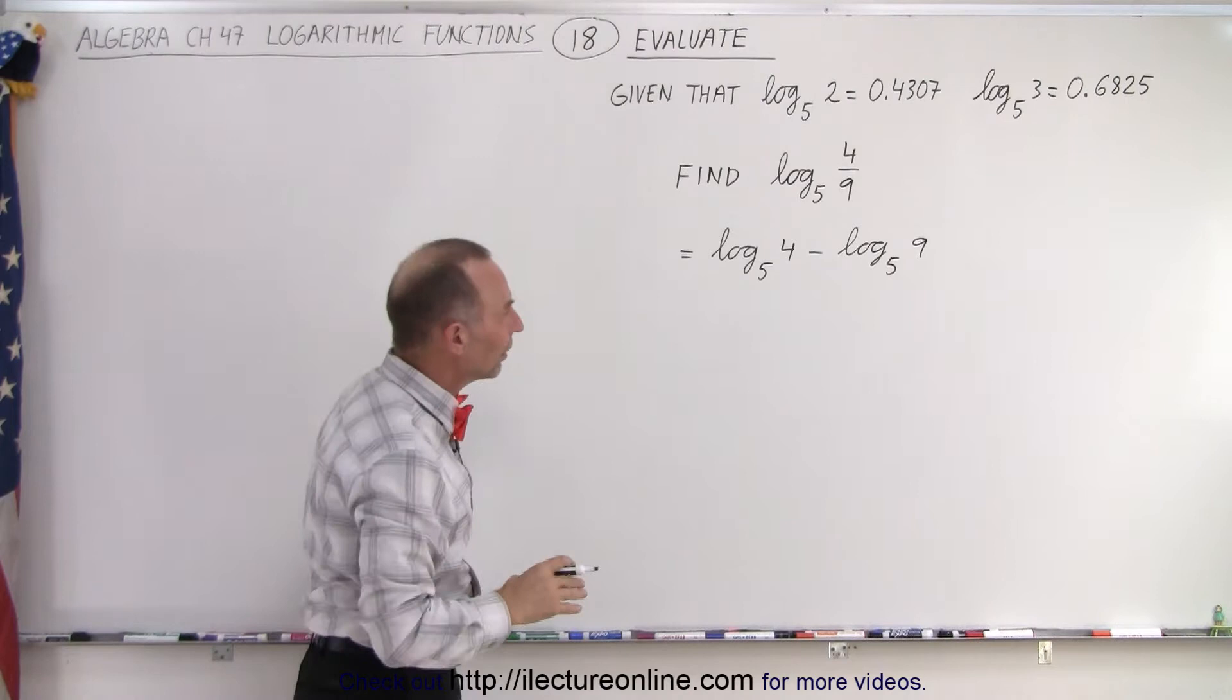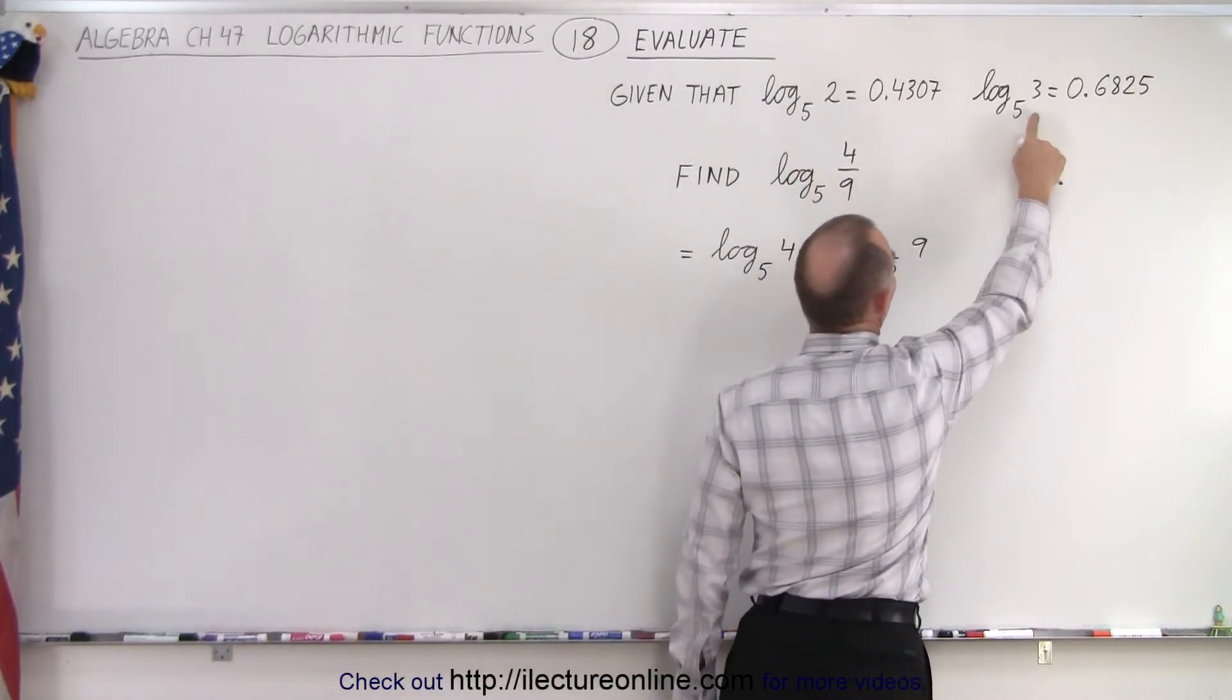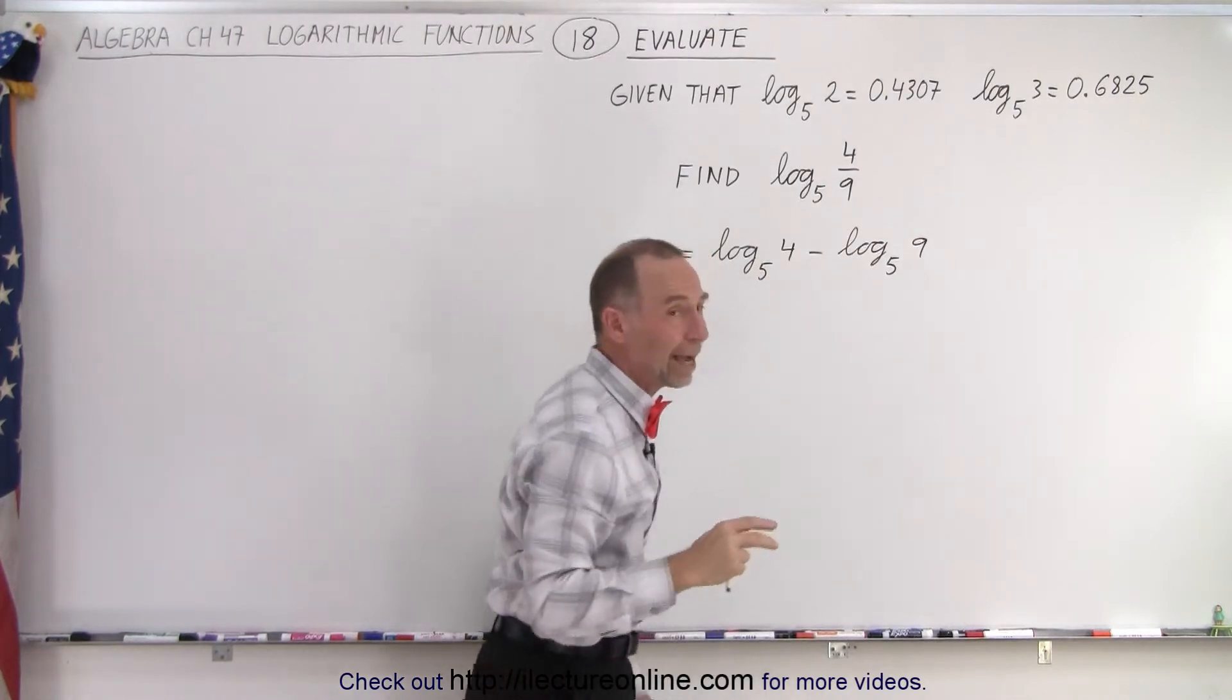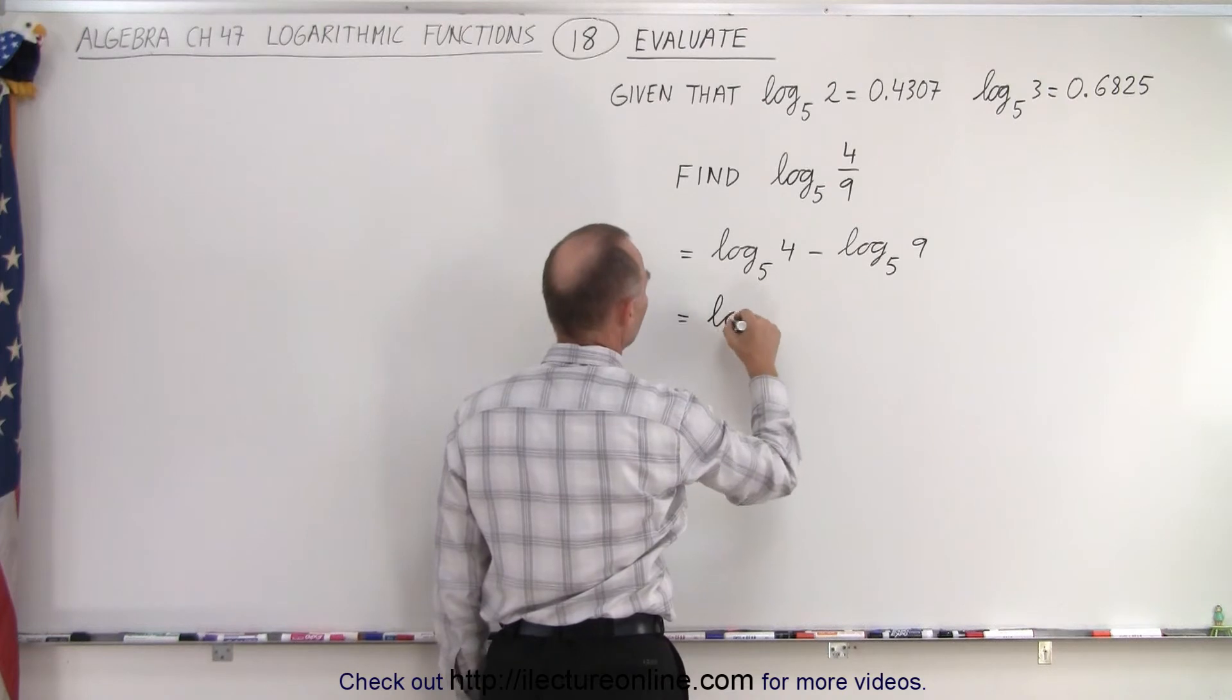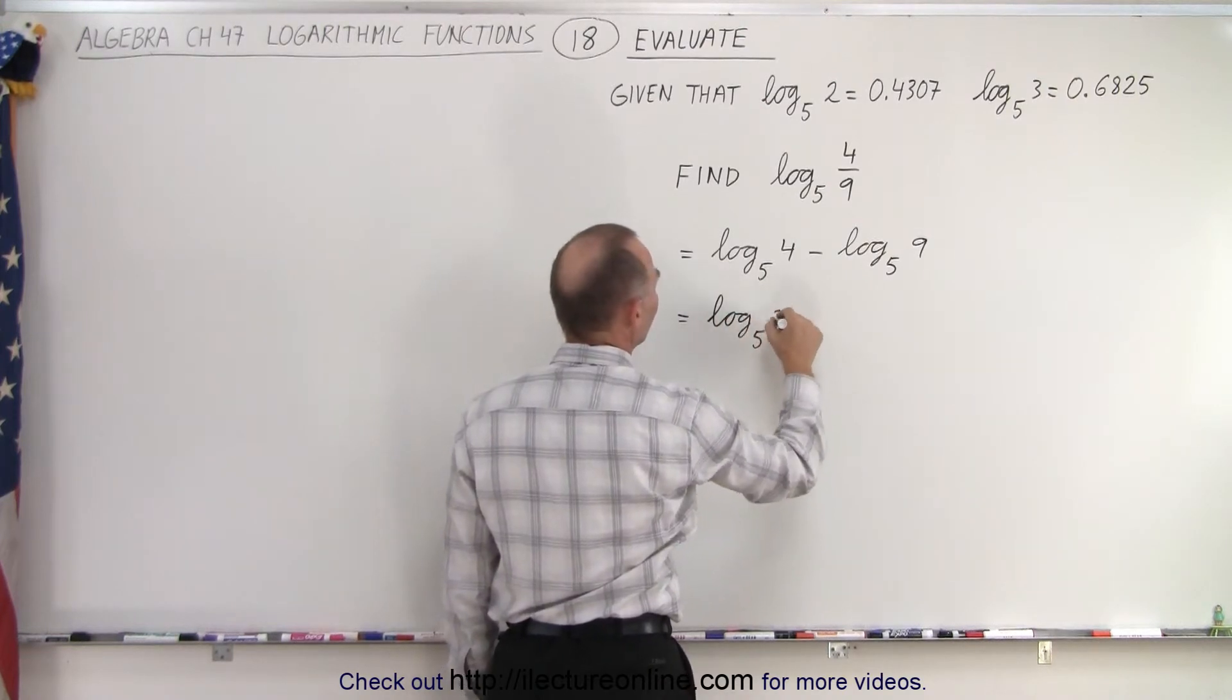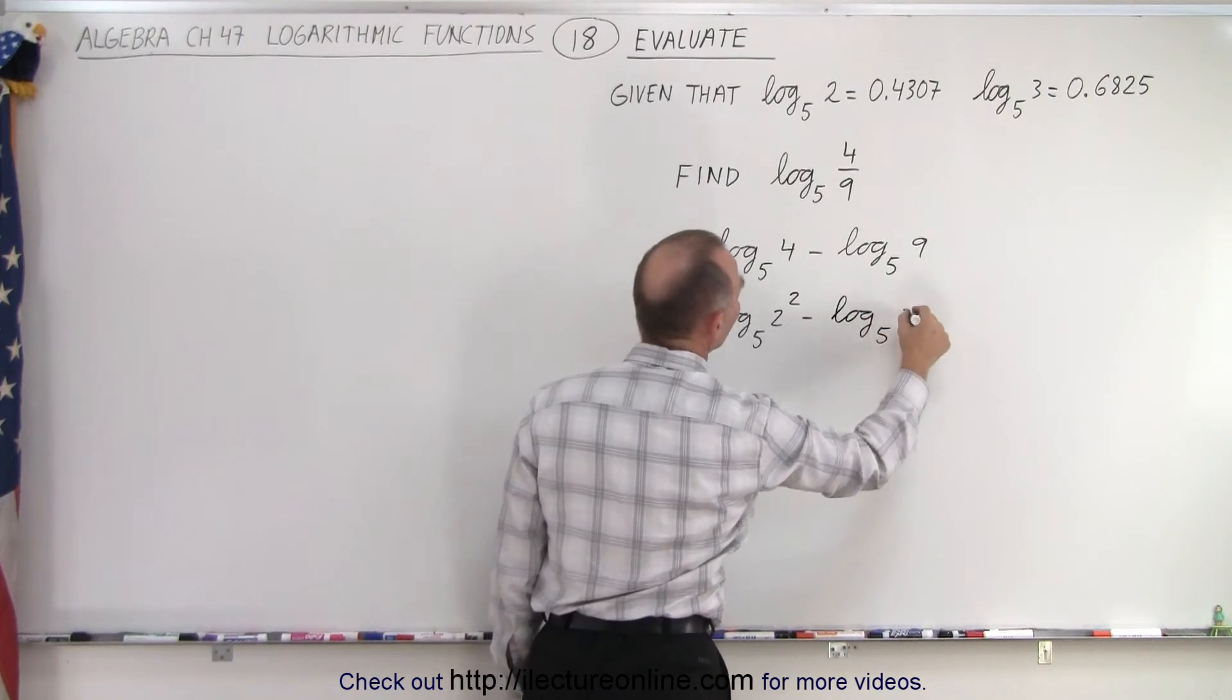And then what we could do is, since we're given the log base 5 of 2 and the log base 5 of 3, we can rewrite 4 and 9 as 2 squared and 3 squared. So let's do that. So this is equal to the log base 5 of 2 squared minus the log base 5 of 3 squared.